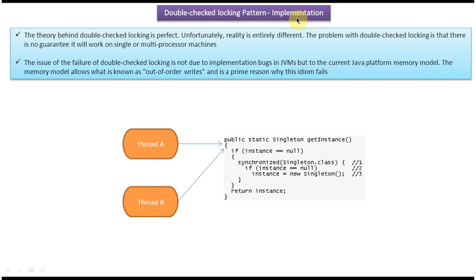In this tutorial we will see how we can implement the double-check locking design pattern. As per the pattern, we have to put the lock only if it is really needed. Here we have the getInstance method — if instance equals null, we put the lock, and again we check if instance equals null, then we create the instance and return it.